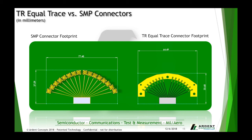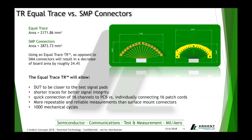We also did the SMP connector comparison to the TR Equal Trace. This one is a little closer in comparison; however, TR Equal Trace still saves you roughly 24.4% of your board space. The SMP connector has roughly about 2,900 millimeters squared as compared to the 2,170 of the Equal Trace. This still implies the same benefits as when comparing to the SMA connector.